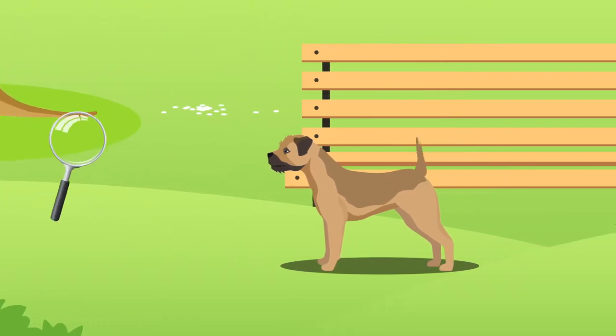Border Terriers have several defining features including their small folded ears, short muzzle and small tail.